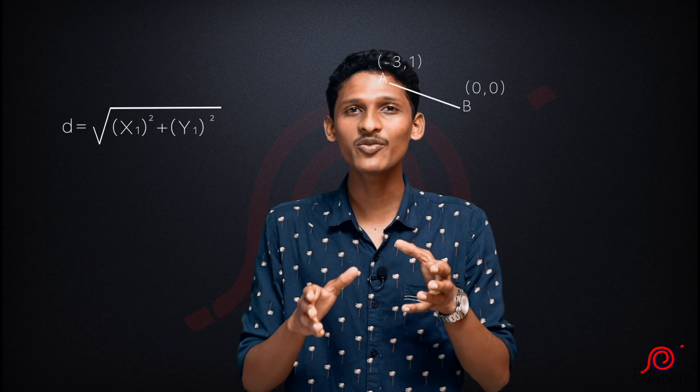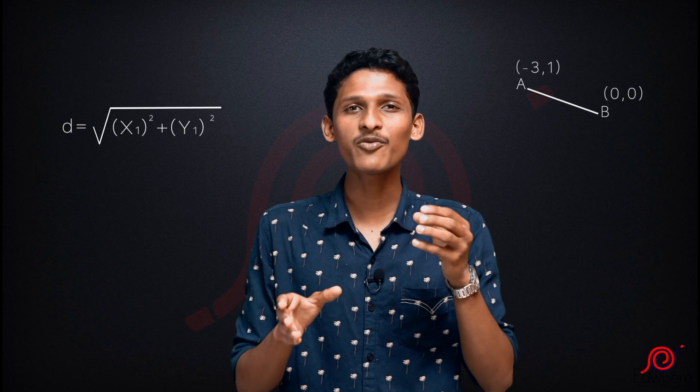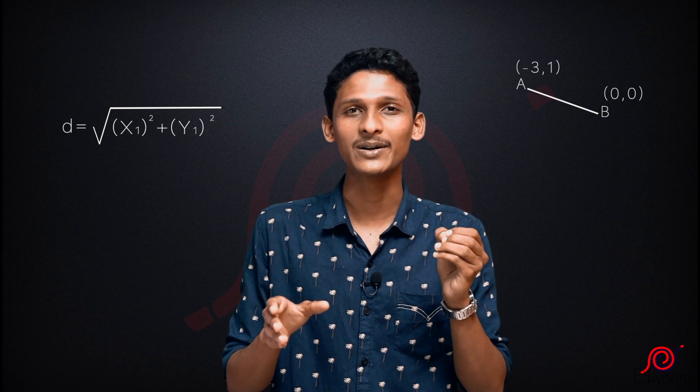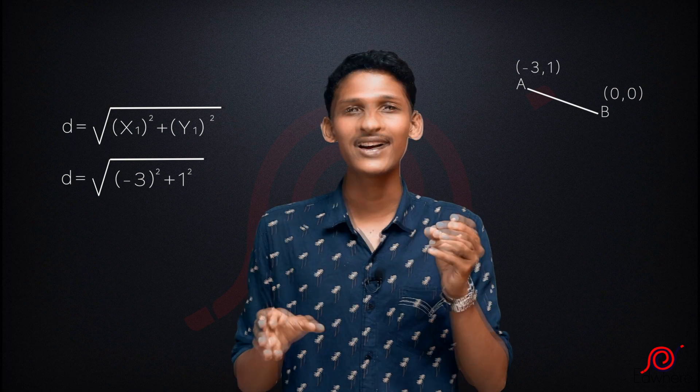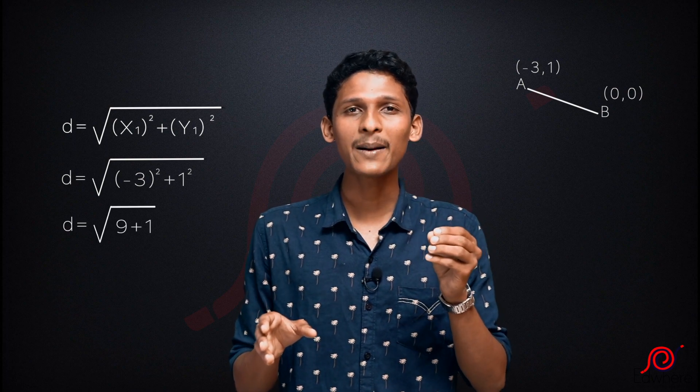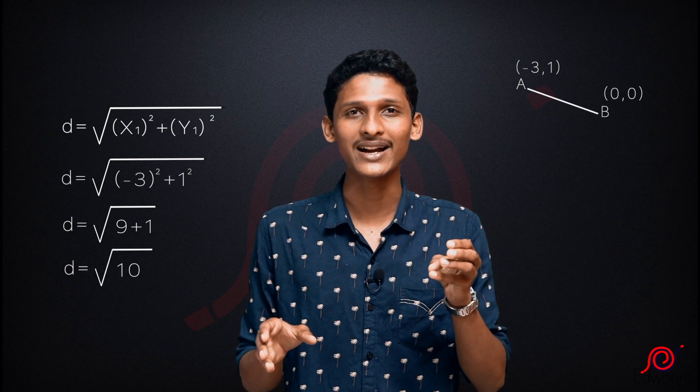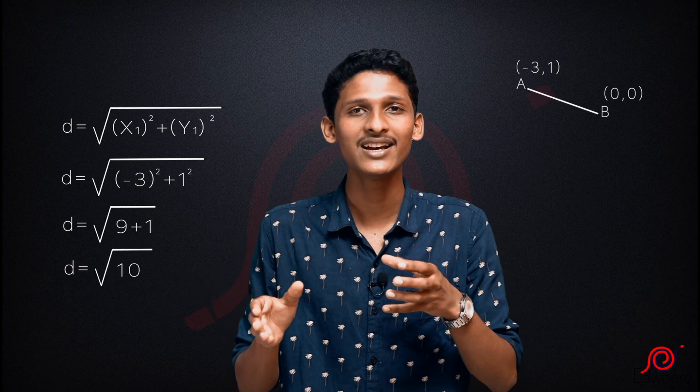We have AB as a side. Point A is (-3, 1) and point B is (0, 0). Since B is the origin, we use the formula: distance = root of (x1² + y1²). Substituting, that is equal to root of ((-3)² + 1²) = root of (9 + 1) = root 10. That distance is equal to root 10.